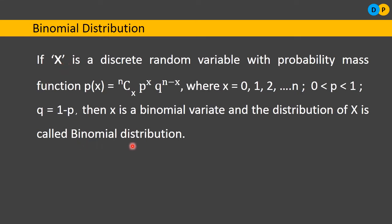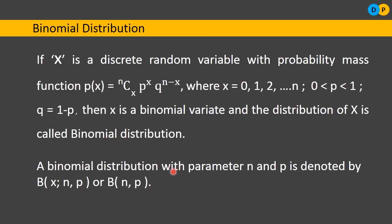In statistical terms, binomial distribution is represented in a different fashion. A binomial distribution with two parameters n and p — where n indicates the number of trials and p indicates the probability of success, which remains the same for all trials — can be simply represented as B(x; n, p) or as B(n, p), representing the two parameters.